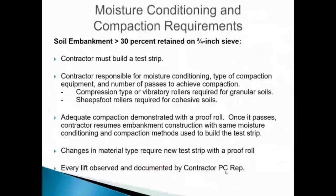Soil embankment with more than 30% retained on a three-quarter-inch sieve: because of the amount and size of aggregate in these materials, we cannot pound proctors on them and cannot test them suitably with a nuclear density gauge. The contractor must build a test strip and will be responsible for moisture conditioning, the type of compaction equipment, and the number of passes. The requirement is that vibratory or compression-type rollers are required for granular soils and sheep's foot rollers for cohesive soils. Compaction is demonstrated with a proof roll, after which the contractor can resume with the same methods used for the test strip.